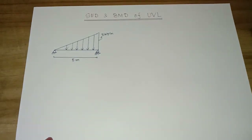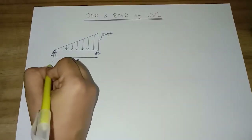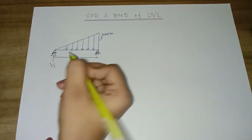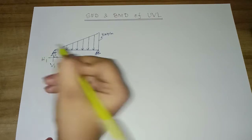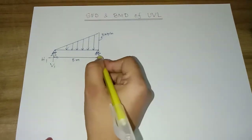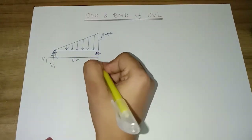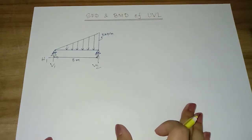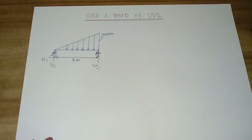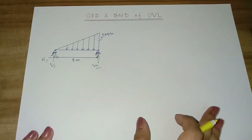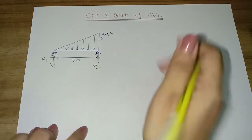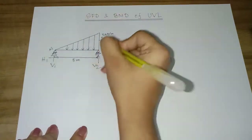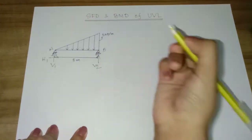At the hinge support, we have a vertical force and a horizontal force. At the roller support, we only have a vertical force. Our first task is the calculation of reaction forces — support reaction. First, taking moments about point A.